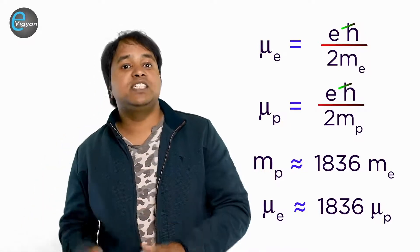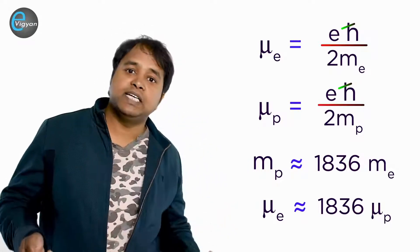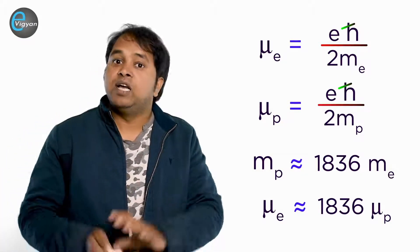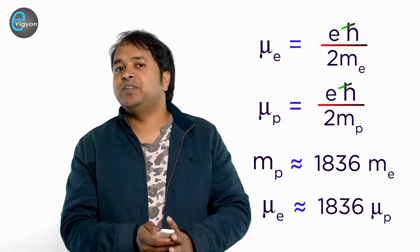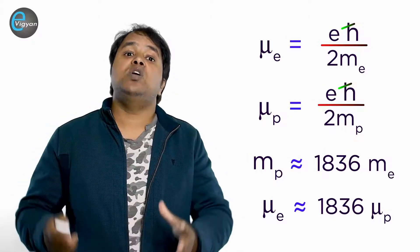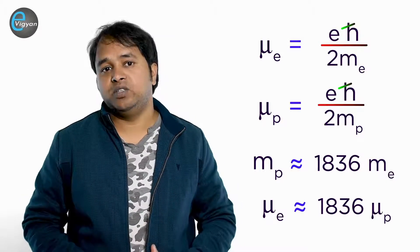Now if an electron would exist in the nucleus, then the nuclear magnetic moment would be of the order of magnetic moment of the electron. But the measured magnetic moment of nuclei are very much less than the magnetic moment of the electron. Thus the electron cannot reside inside the nucleus.